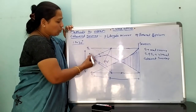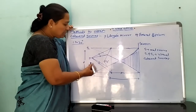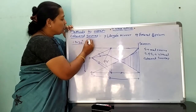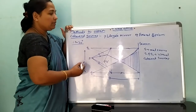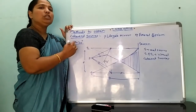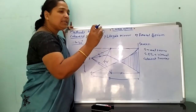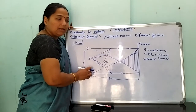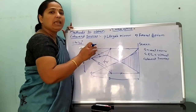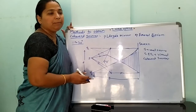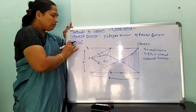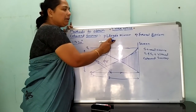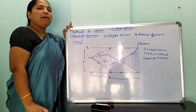The two virtual sources are produced by the biprism. We get the two virtual coherent sources, which emit light waves whose phase difference is constant — meaning the two waves produced by the two sources are in the same phase. These are the methods to obtain the coherent sources: the first method is Lloyd's mirror method, and the second method is Fresnel biprism method.